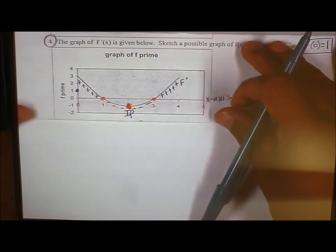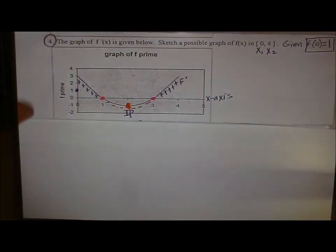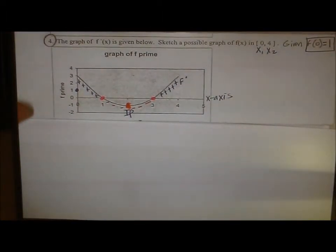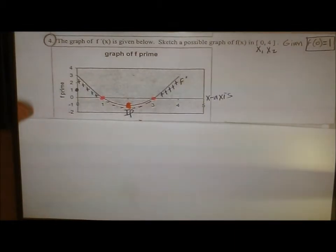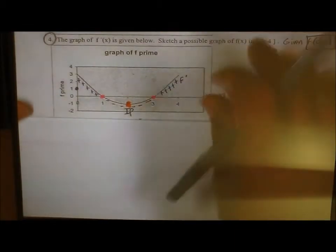So recall the sign charts you made for f prime and f double prime in the previous lesson. And essentially you're doing the same thing, but you're just doing it visual. So what does that mean?